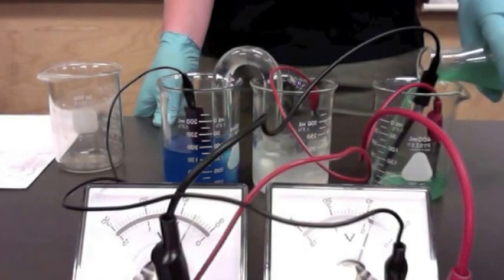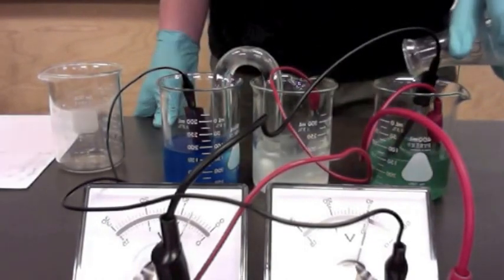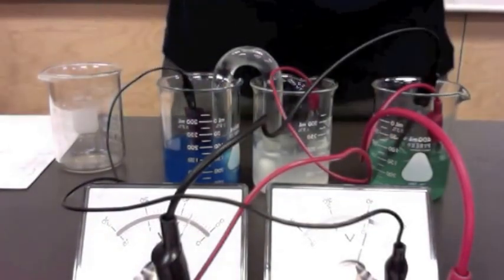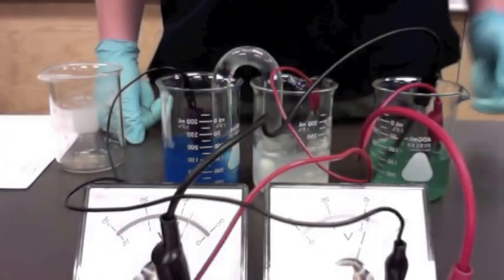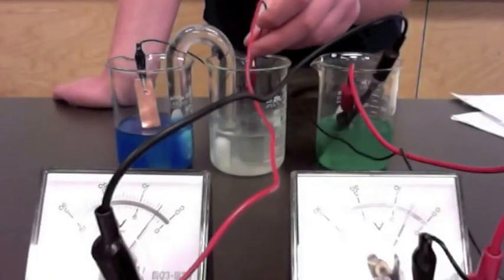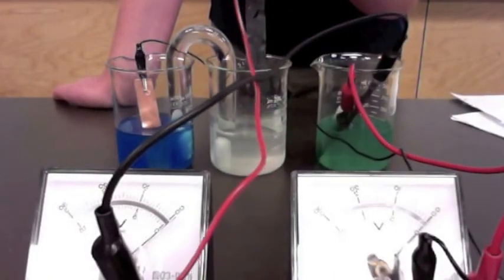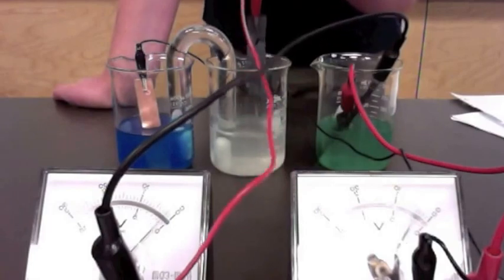So here you see me connecting the cell we made in the first step to an electrolytic cell. The electrolytic cell is non-spontaneous, meaning it requires energy to be inputted before it will work. So in this case, I'm using the energy provided by the electrochemical cell to power the electrolytic.